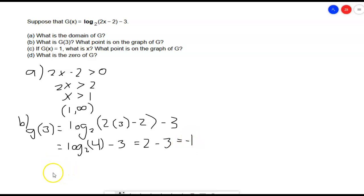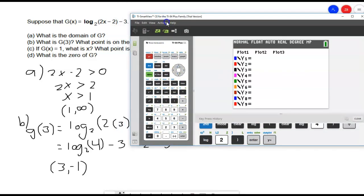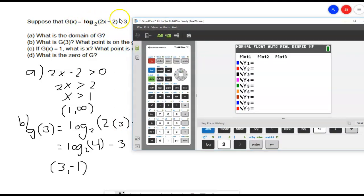So, this is really just equal to 2 minus 3, which is equal to negative 1. So, then we actually have the point with an x value of 3, a y value of negative 1. Let's go ahead and just kind of check that on the calculator, make sure that it's looking right. So, pull my calculator back up.